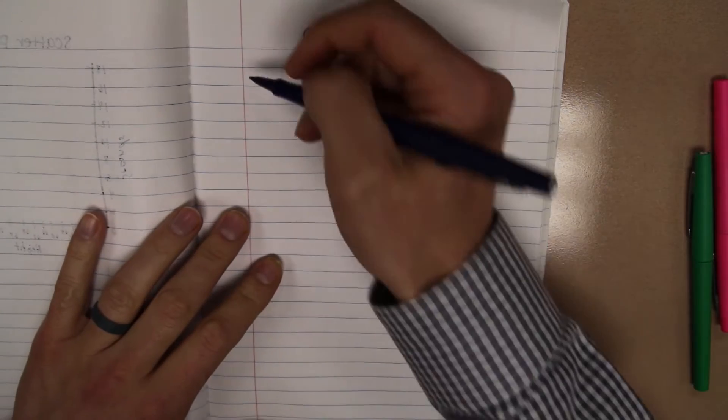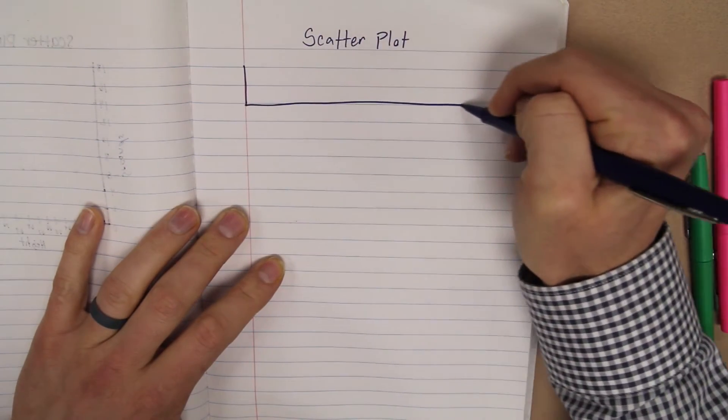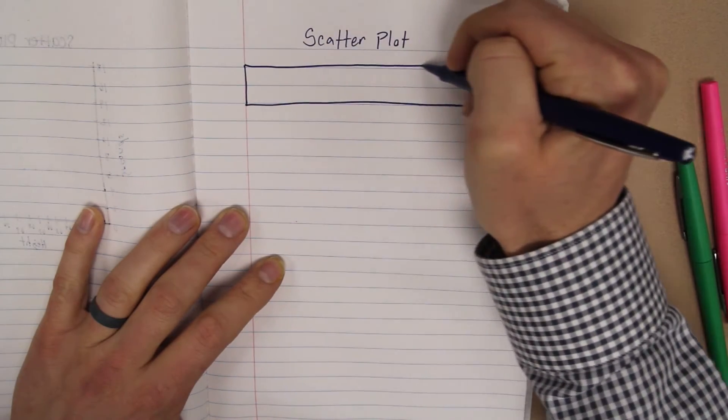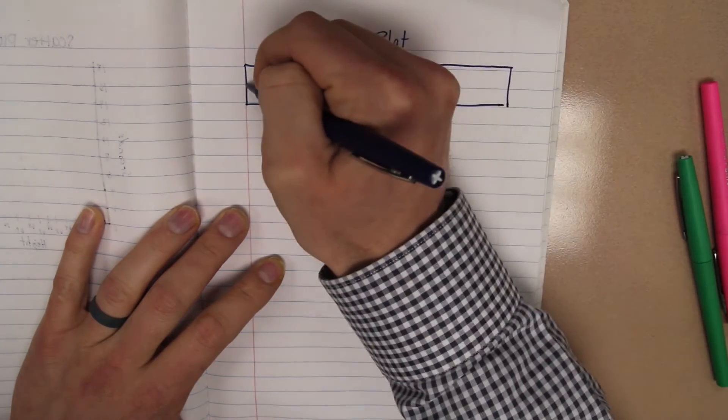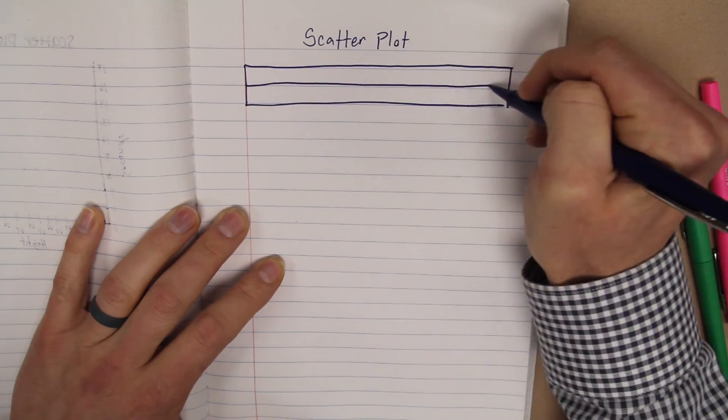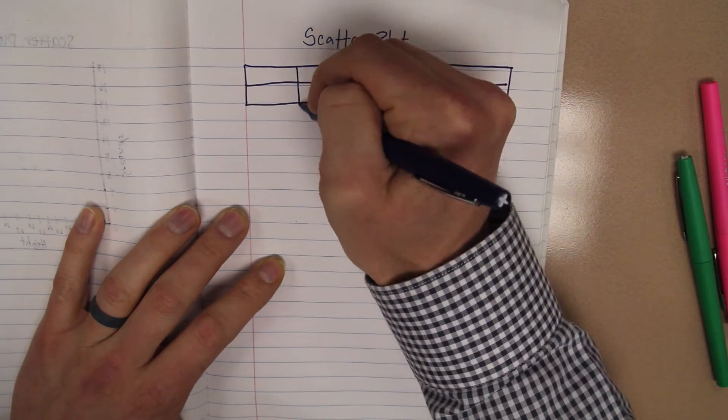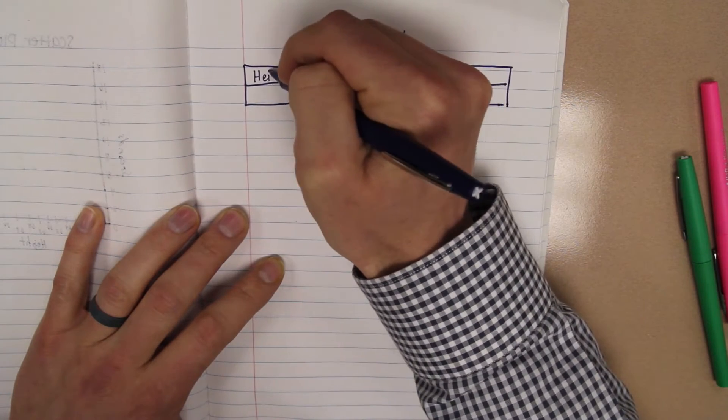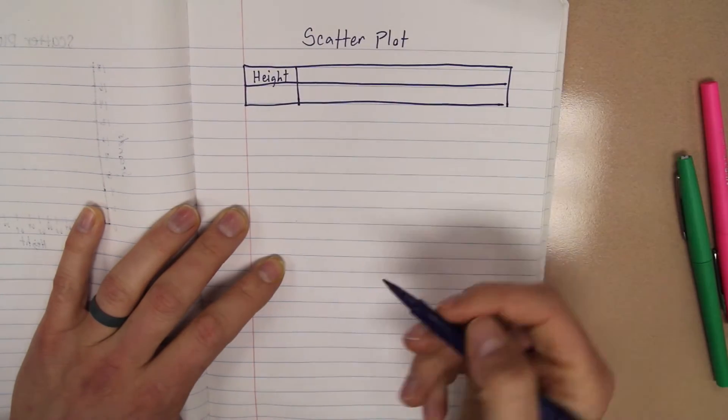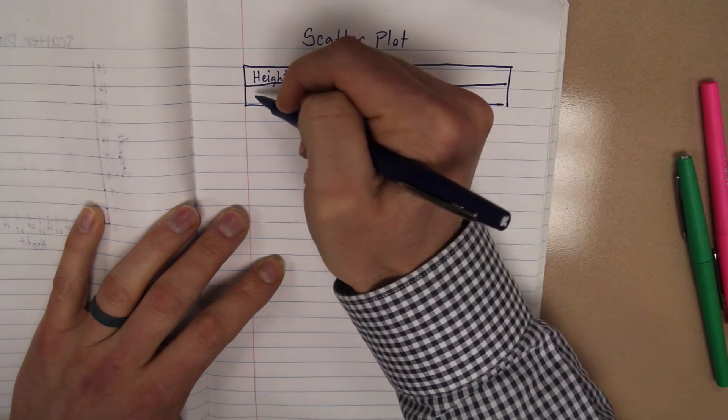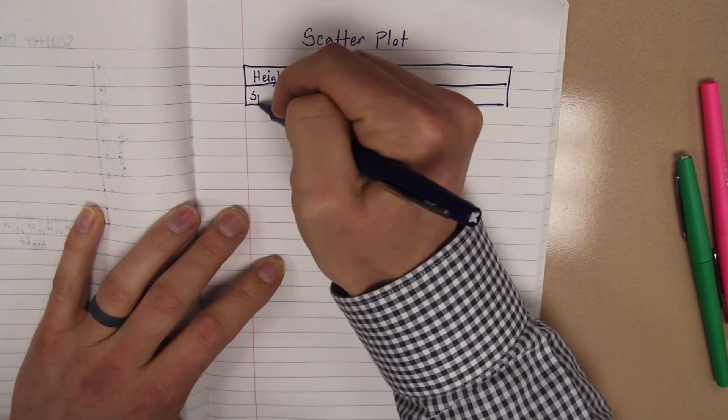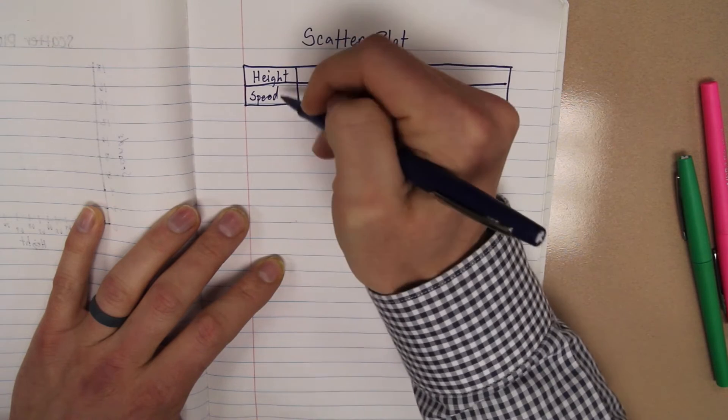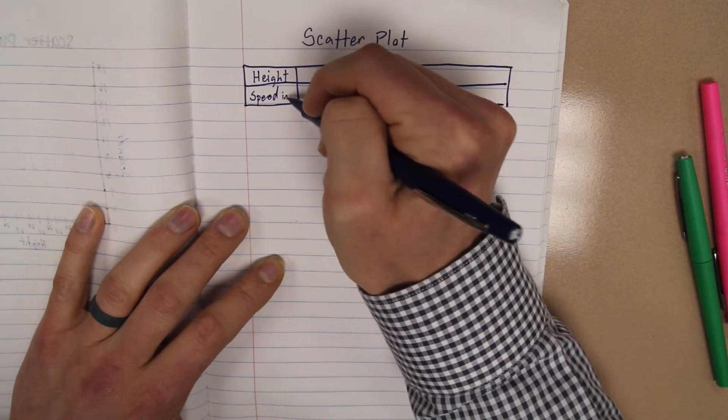So the first thing I'm going to do is I'm going to make my little input-output chart sort of table. So just like when we did input-output table, I'm going to make my own here. And on one side, we're going to have height. And on the other, I'm going to put speed, or time, in seconds.